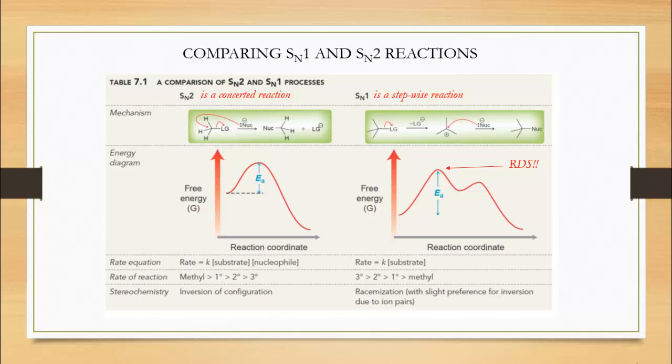SN1 favors sterically hindered substrates, because they will form more stable carbocations after the leaving group detaches. This reaction will give you a mix of products, made up of inverted and retained configurations, where the inverted configuration is present in higher percentages, because the leaving group's electron density shields one side of the carbocation from being attacked by the nucleophile.